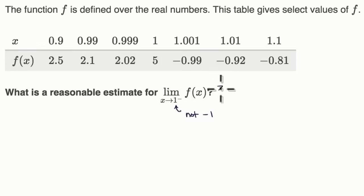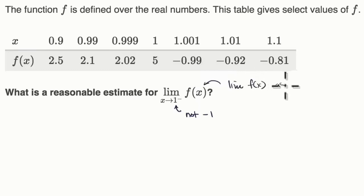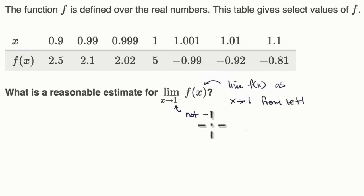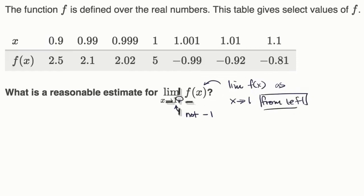This is saying the limit of f of x as x approaches one from the left. That's what that little negative tells us — it tells us we're approaching one from values less than one. If we were approaching one from the right, from values greater than one, that would be a positive sign right over there.